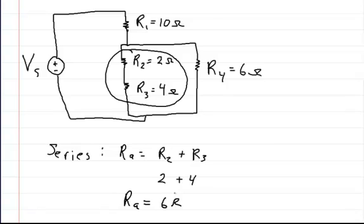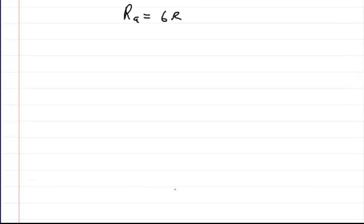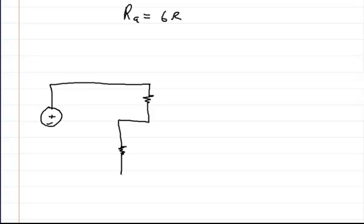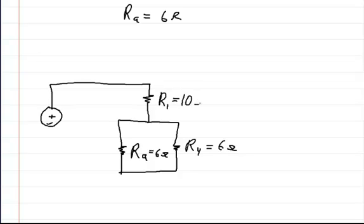Now let's redraw the circuit. So now we're going to have, this is what the circuit is going to look like now. Now we're going to have a single resistor here which we're going to call Ra. And we're still going to have this other resistor R4, which is equal to 6 ohms. And Ra is also equal to 6 ohms, and this one R1 is equal to 10 ohms.